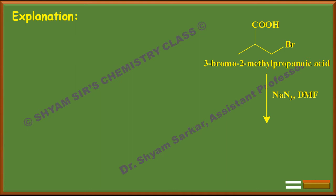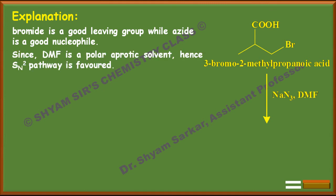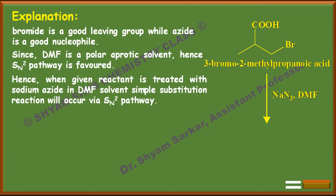In this substrate, bromide is the leaving group, and we know bromide is a very good leaving group. Additionally, N3⁻ is given, which is a good nucleophile. Since DMF is a polar aprotic solvent, the SN2 pathway will be favored.